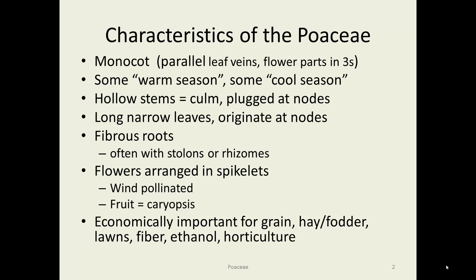These virtually always have fibrous root systems, sometimes extremely deep, like our prairie roots — they tend to be 15, even 20 or 30 feet deep in some cases. They often multiply or spread with stolons or rhizomes, which are both specialized stems. I'll go into more on that in the next slide.